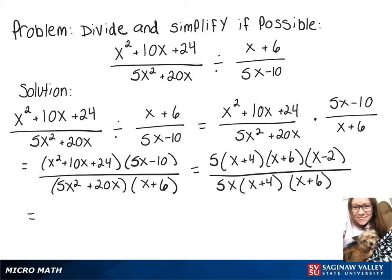We can rewrite this as 5 over 5 times x plus 4 over x plus 4 times x plus 6 over x plus 6 times x minus 2 over x.